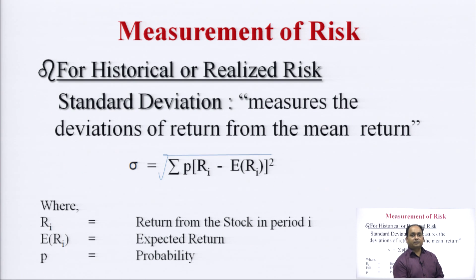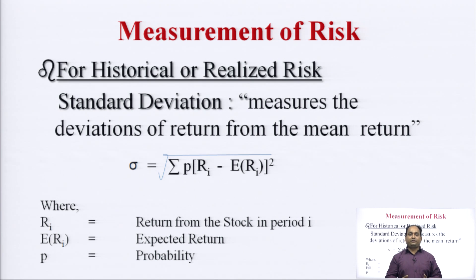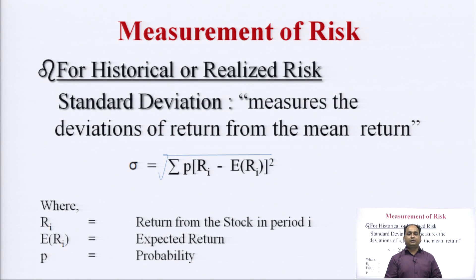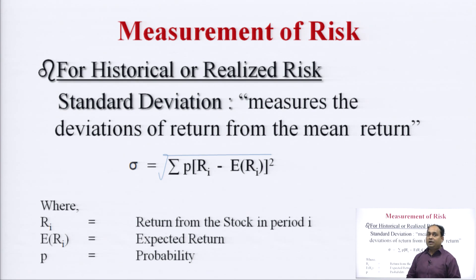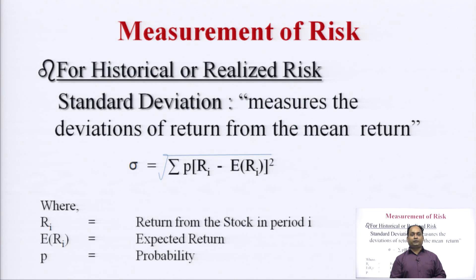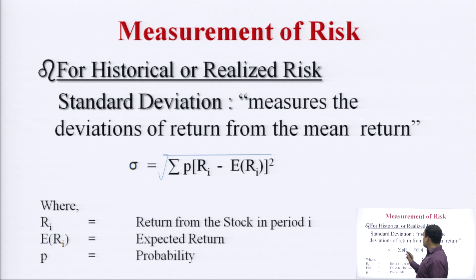Measurement of Risk — the historical or realized risk. The risk, as we have discussed in our previous lecture, is the deviation between the actual and expected return assigned with the probability. The deviation between the expected return and the realized return, which is assigned with the probability, is called risk. The first and most important tool we are using is the standard deviation. It measures the deviation of return from the mean return — what we are getting actually and what we have expected, the deviation between the two, assigned with probability.